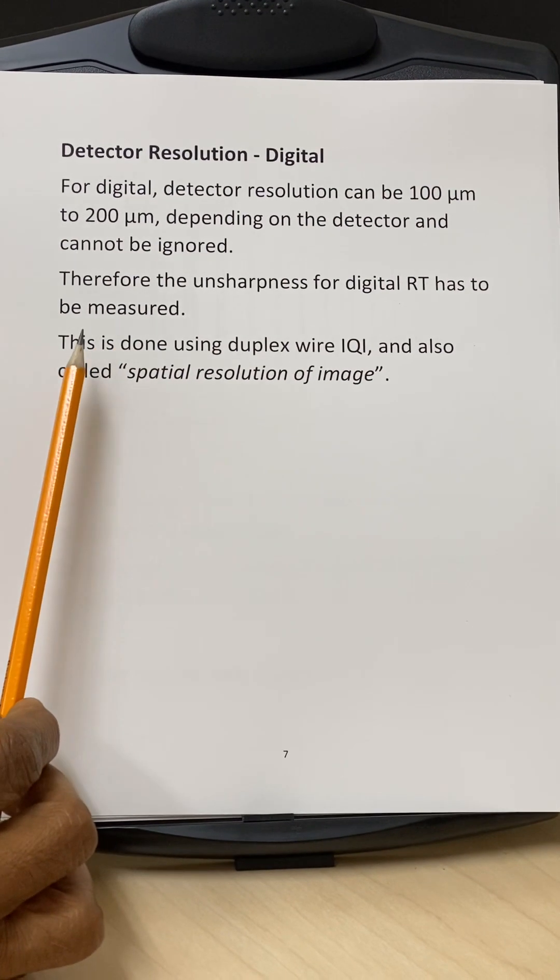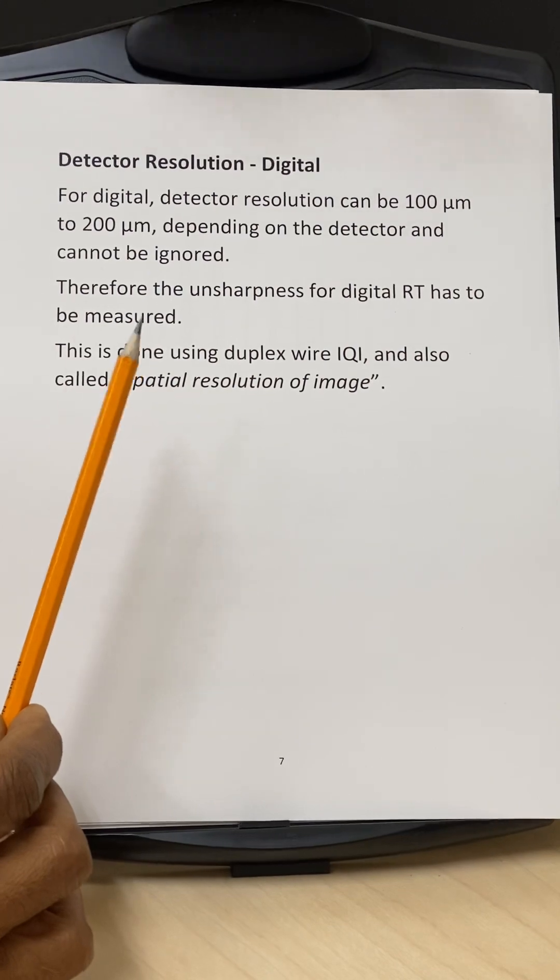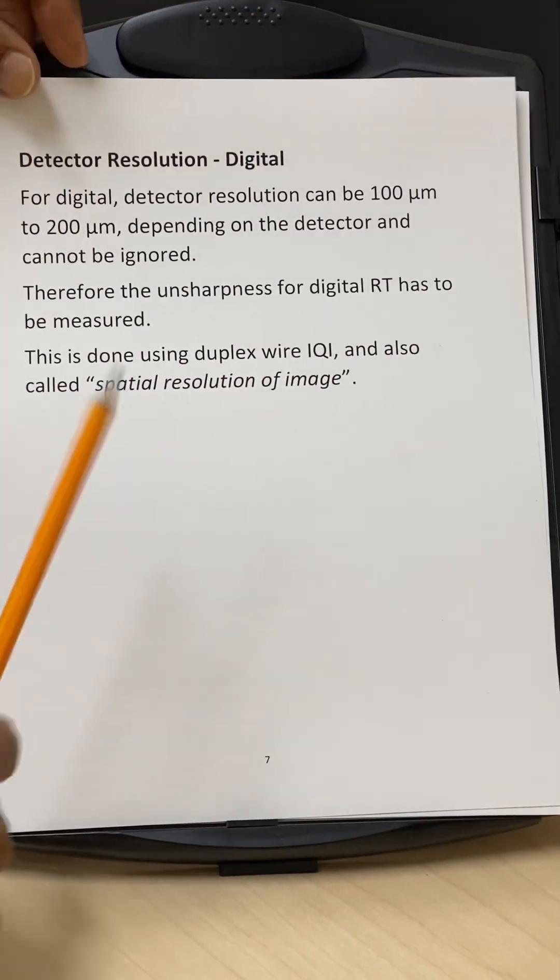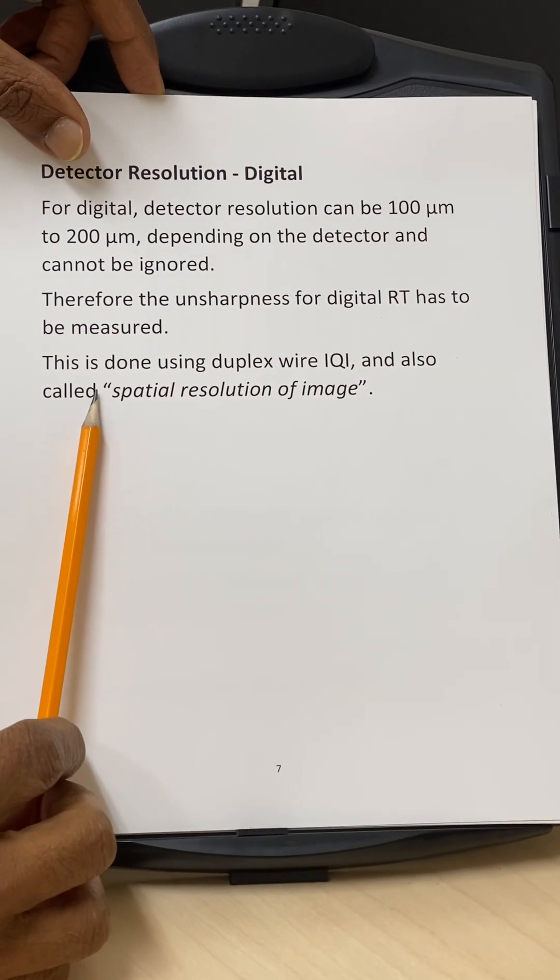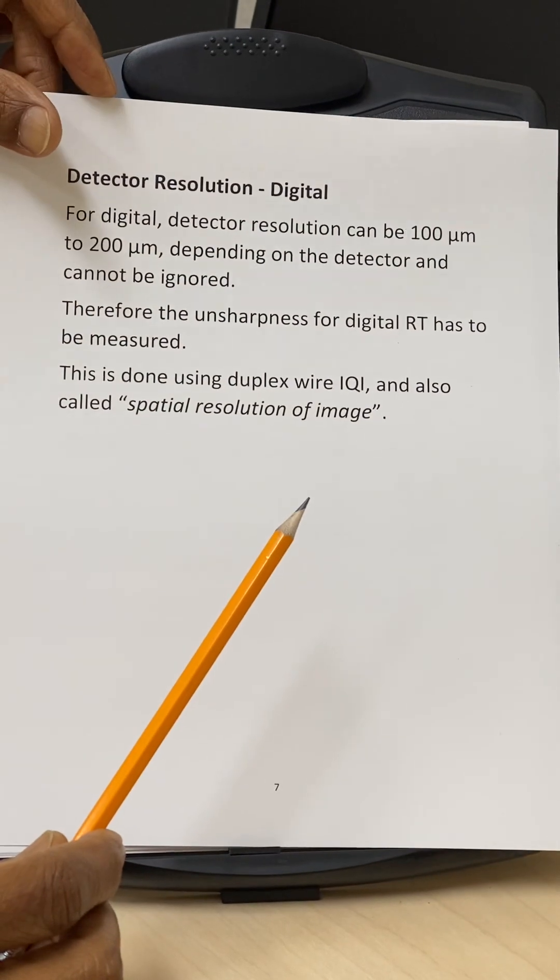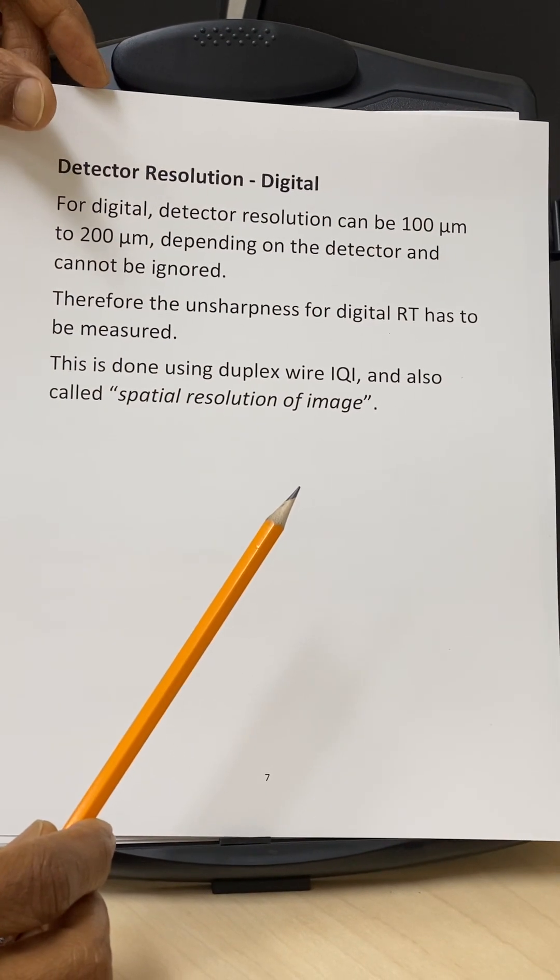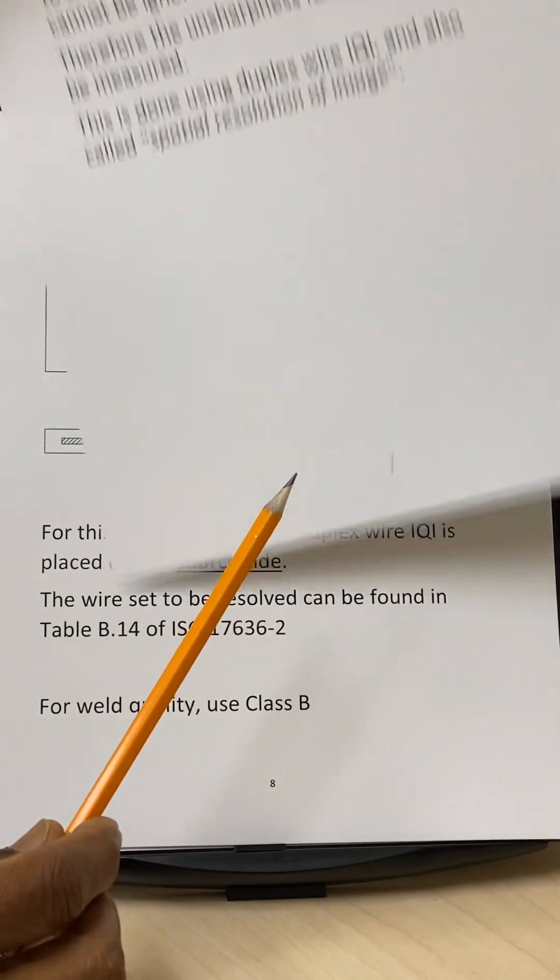So how is that done? It's not just the geometry. We actually measure the spatial resolution of the image using what is called the duplex wire IQI. And what is a duplex wire IQI? A duplex wire IQI is actually a set of 13 wire pairs as shown here.